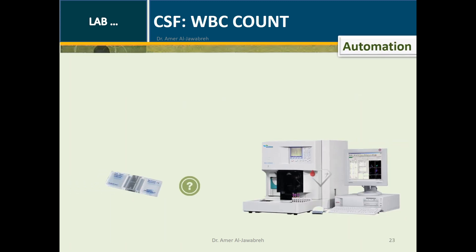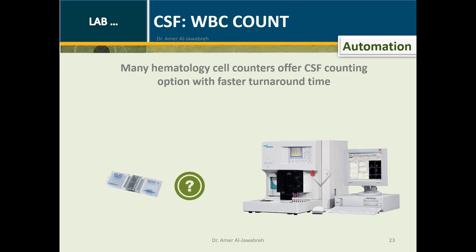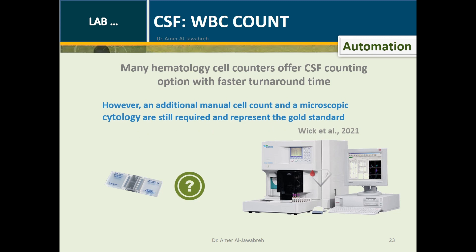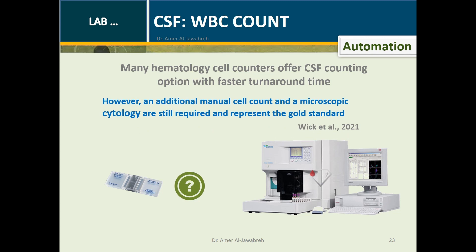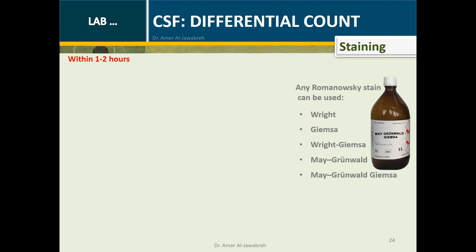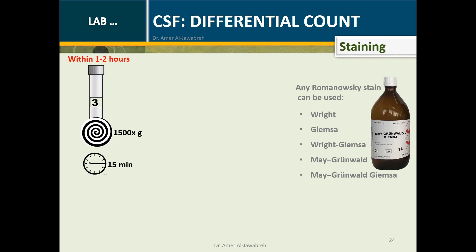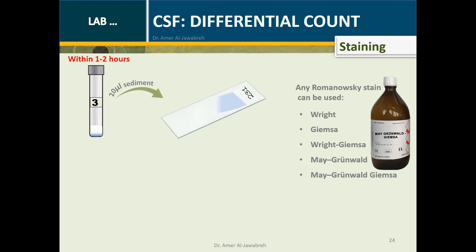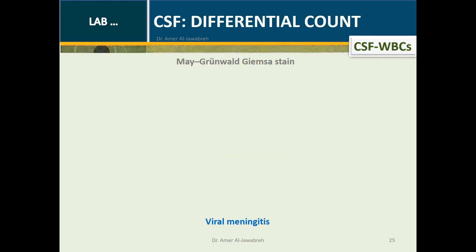CSF White BC Count — Automation: Hematology cell counters offer a CSF counting option; however, manual cell count and microscopic cytology remain the gold standard. CSF Differential Count — Staining: Any Romanovsky stain can be used, including Wright, Giemsa, Wright-Giemsa, May-Grünwald, or May-Grünwald-Giemsa. Spread 20 µL of CSF sediment on a clean slide and stain according to protocol.